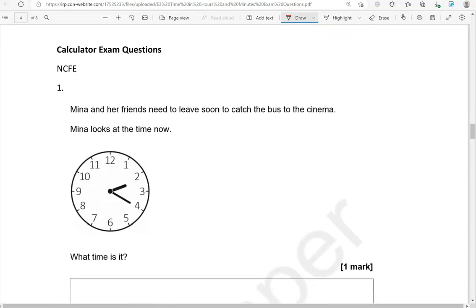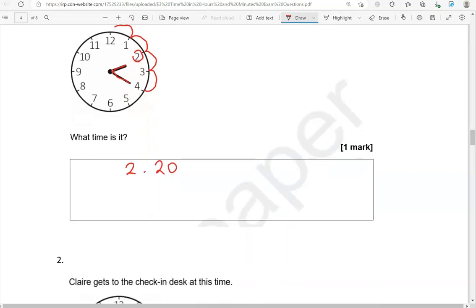Now we're moving to calculator questions. Mina and her friends need to leave soon to catch the bus to the cinema. Mina looks at the time now. What time is it? Starting with the hours, the short hand is at 2. And then we look at the minutes: 5, 10, 15, 20. We don't know whether this is in the morning or the afternoon, so we're just going to leave it as 2:20.